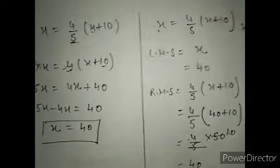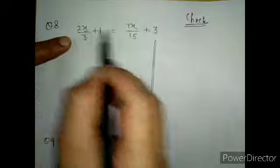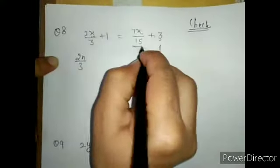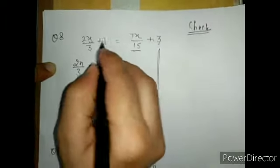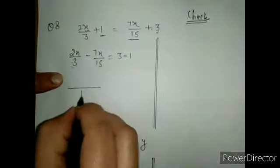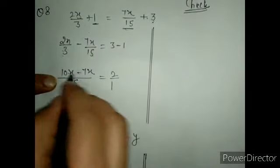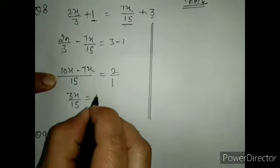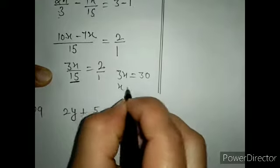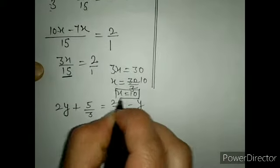Now come to question number 8. Given: 2x/3 plus 1 equals 7x/15 plus 3. Keep x terms on one side and remaining terms on the other. 7x/15 comes to the left and becomes minus 7x/15. The 1 goes to the right and becomes minus 1. Take LCM, which is 15. This gives 10x minus 7x over 15 equals 3 minus 1, so 3x/15 equals 2. Cross-multiplying: 3x equals 30, so x equals 10.